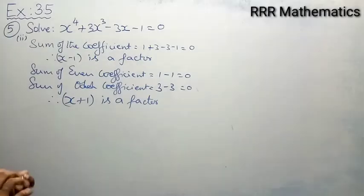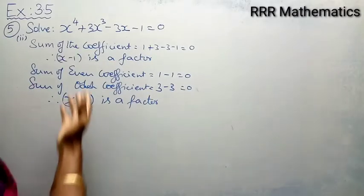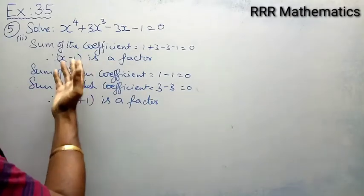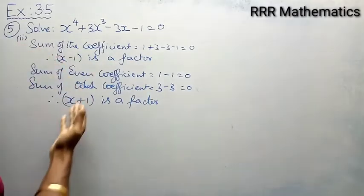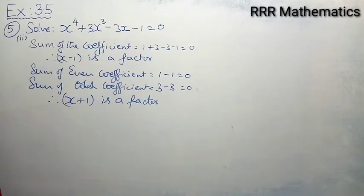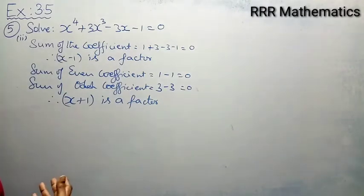The given equation is degree 4, and directly we are getting two factors: x - 1 and x + 1. The remaining two factors can be found using synthetic division.